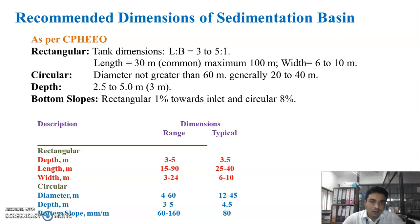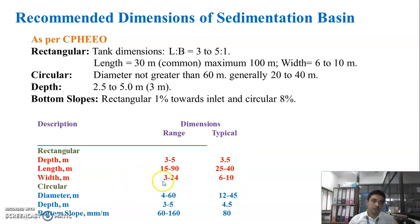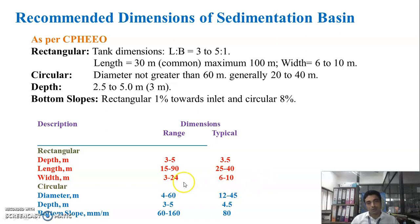For rectangular type sedimentation tank, the depth range is 3 to 5 meters, typically taken as 3.5 meters. The length is generally 15 to 90 meters, typically taken as 25 to 40 meters. The width range is 3 to 24 meters, generally taken as 6 to 10 meters.